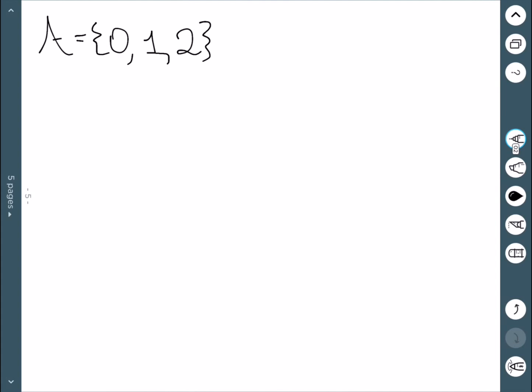Here we have the set A, which is equal to 0, 1, 2. So if I want to find the power set of A, well, the empty set is always a subset. And next, we'll consider subsets of size 1. We could have 0, or 1, or 2. And those are all the possible ways we could have a single element.